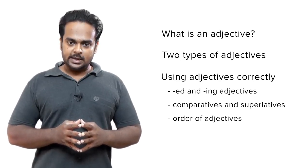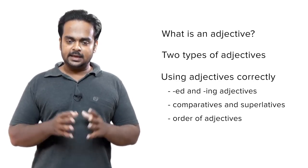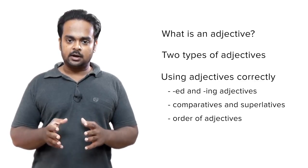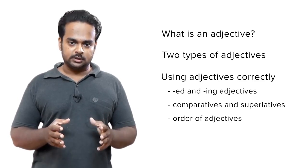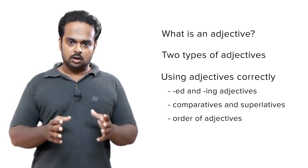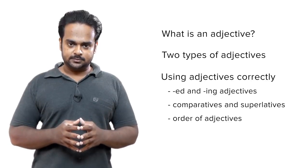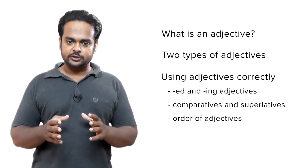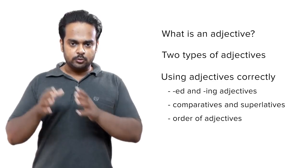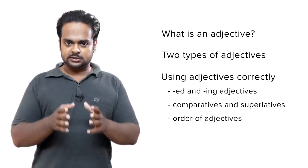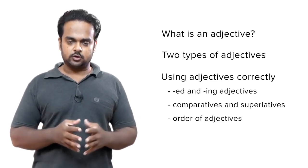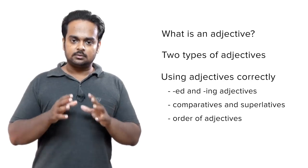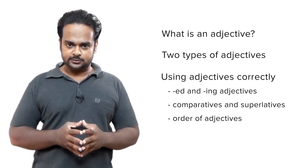We will look at three areas: ed and ing adjectives, comparatives and superlatives, and the order of adjectives — that is, when you have more than one adjective in a sentence, which should you put first, second, etc. So we'll talk about avoiding errors in these three areas.